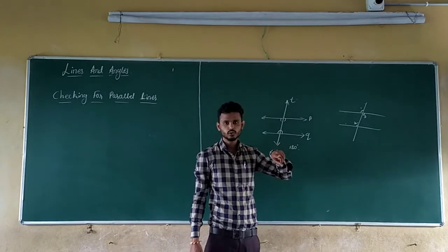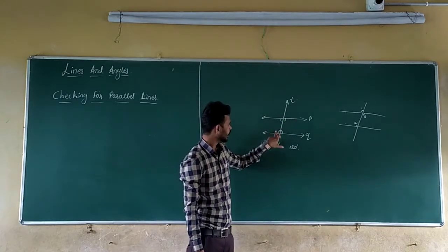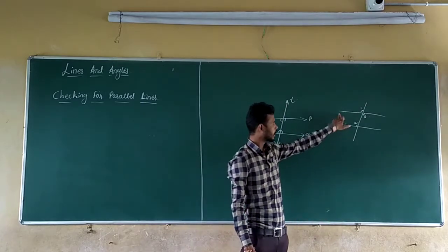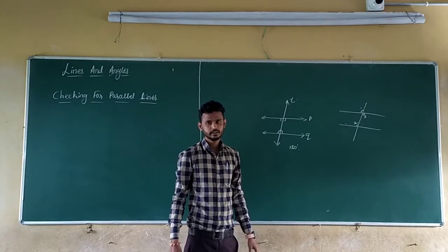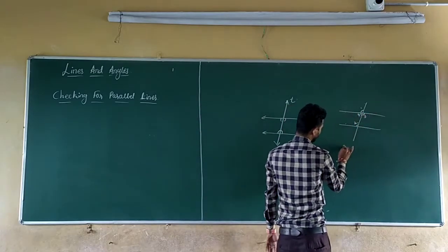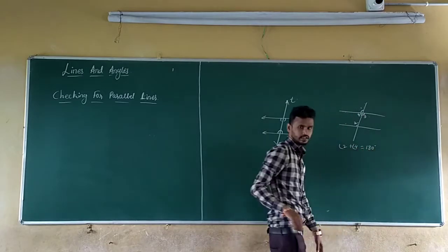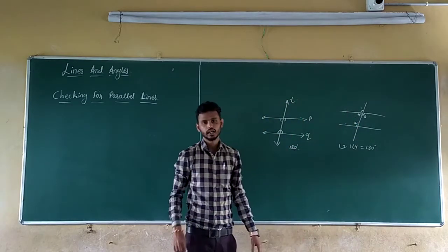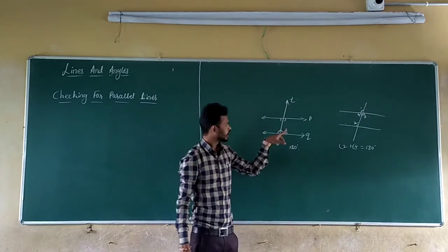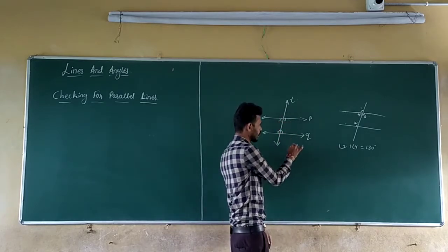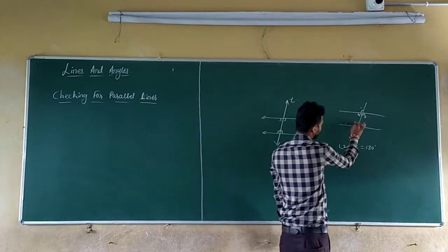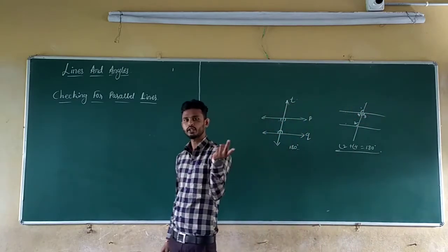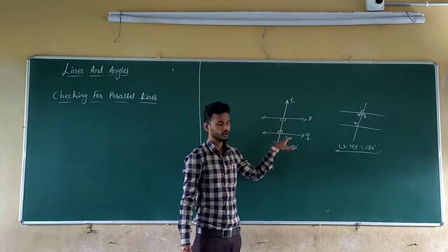This is also vice versa: if two lines are parallel, alternate interior angles are equal; and if alternate interior angles are equal, then the given lines are parallel. Third: if the angles on the same side of the transversal are supplementary — that is, the sum of those two angles is 180 degrees — then the two lines will become parallel. This is the vice versa of the third property from the previous class.